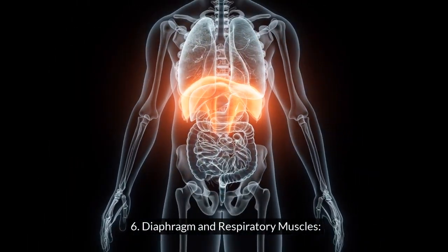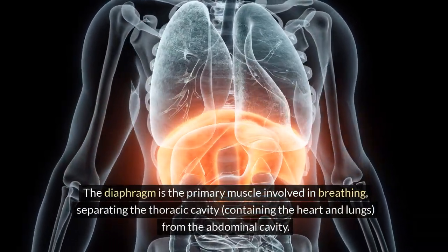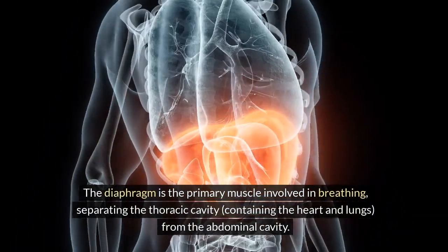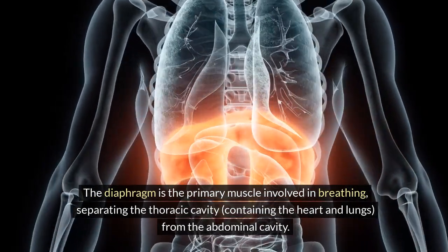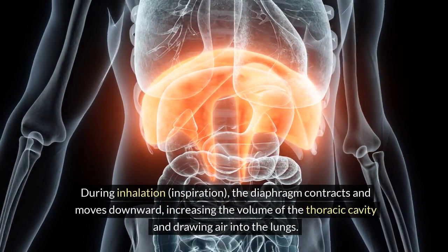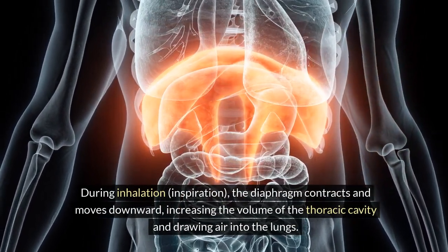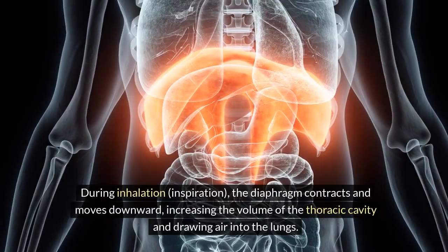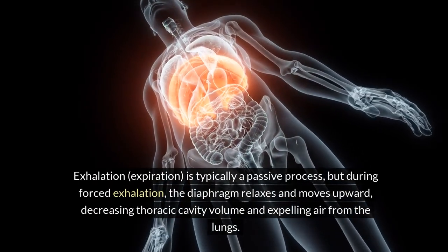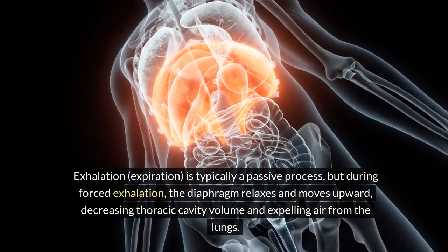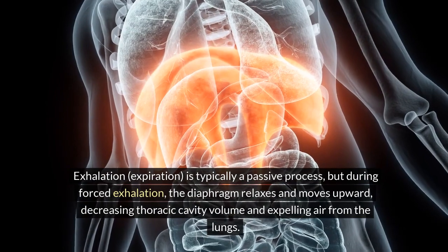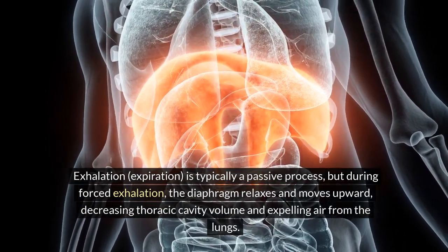The diaphragm is the primary muscle involved in breathing, separating the thoracic cavity (containing the heart and lungs) from the abdominal cavity. During inhalation, the diaphragm contracts and moves downward, increasing the volume of the thoracic cavity and drawing air into the lungs. Exhalation is typically a passive process, but during forced exhalation the diaphragm relaxes and moves upward, decreasing thoracic cavity volume and expelling air from the lungs.